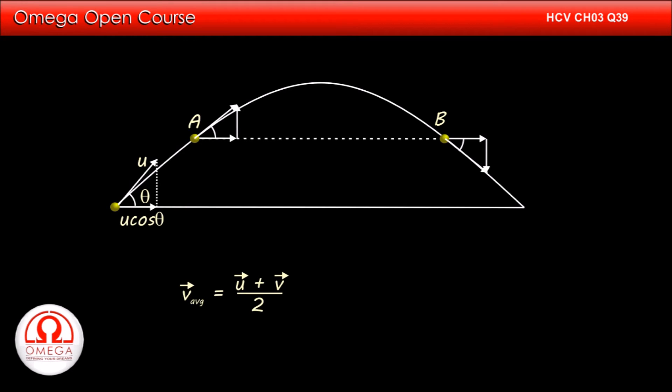So, when we add the velocity vector at a and b, the vertical components of the velocity at these two points will cancel each other out and horizontal components will add up. Since the horizontal component of the velocity at both these points is u cos theta, the sum of the velocity vector at these two points is 2 u cos theta.